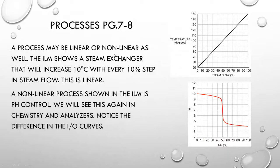Processes may be linear or non-linear as well. The ILM shows in a steam exchanger example that temperature will increase 10 degrees Celsius with every 10% step in steam flow — so this is linear. A non-linear process shown in the ILM is pH control. Notice the difference in the I/O curves: I make a 10% change here and there's a little bit of a difference; another 10% change, a very small difference — and then suddenly another 10% change produces a huge difference.